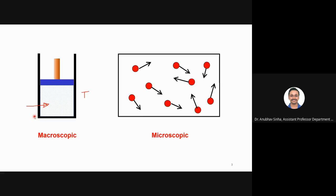For the microscopic approach, I would be talking about molecules — how they move, what is the velocity distribution, what is the number density of these molecules. But for this subject, we'll limit to the macroscopic level. We'll talk about system level and will not go into the detail of molecular level approach.